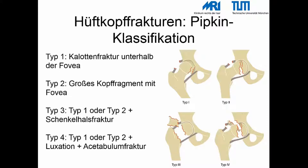Hüftkopffrakturen werden nach der Pipkin-Klassifikation eingeteilt. Dabei liegt beim Typ 1 die Frakturlinie unterhalb der Fovea. Beim Typ 2 liegt ein großes Kopffragment oberhalb der Fovea vor. Typ 3 sind Typ 1 oder Typ 2 zusätzlich zu einer Schenkelhalsfraktur, und Typ 4 sind Typ 1 oder Typ 2 Frakturen mit gleichzeitiger Luxation und Acetabulumfraktur.